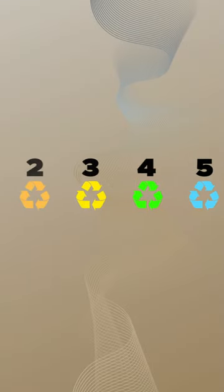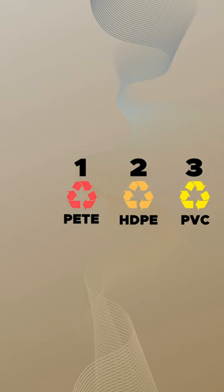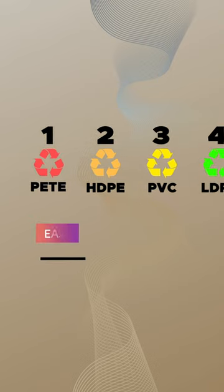The plastic resin codes and symbols were developed in 1988 by the Society of Plastics Institute to facilitate the sorting of plastics.